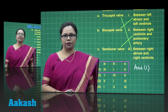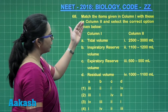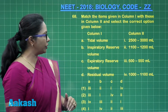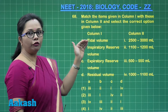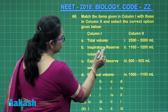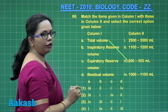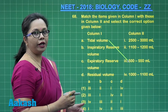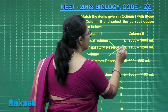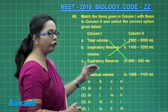Question 68 is another match-the-column question where column 1 gives pulmonary volumes and capacities and column 2 gives their values. Tidal volume is the volume inhaled and exhaled without effort, which is 500 to 550 milliliters. Inspiratory reserve volume is the volume of air forcefully inhaled over and above tidal volume, which is 2500 to 3000 ml.